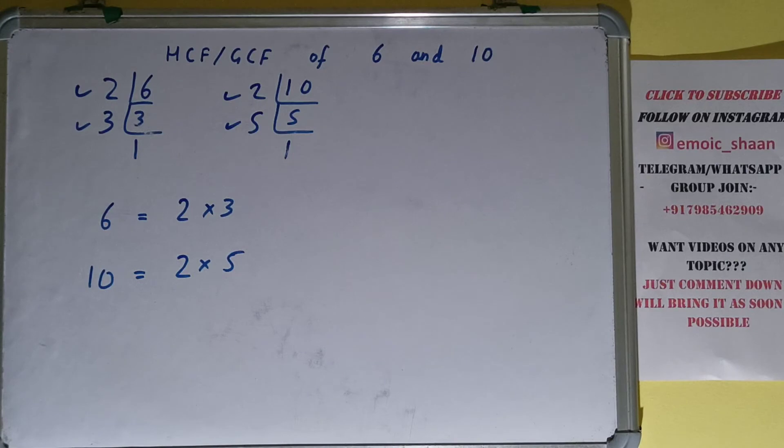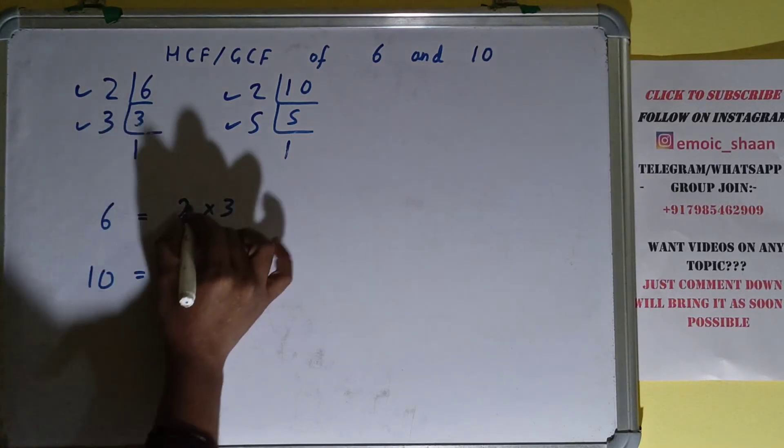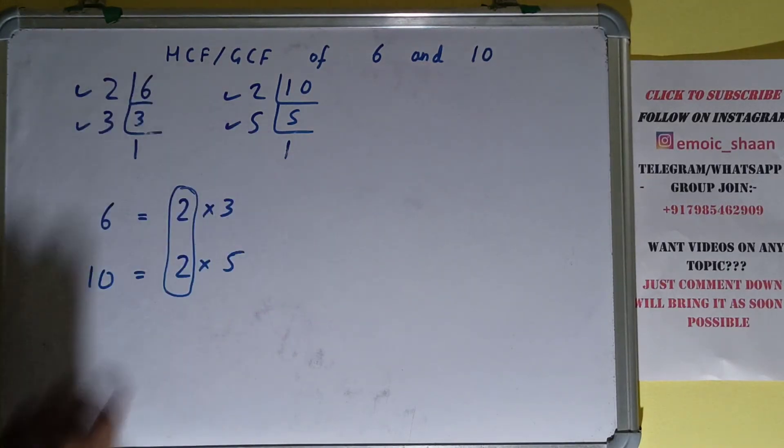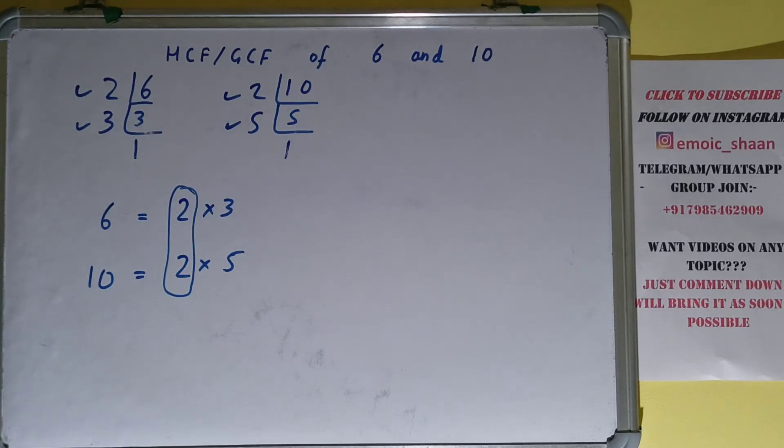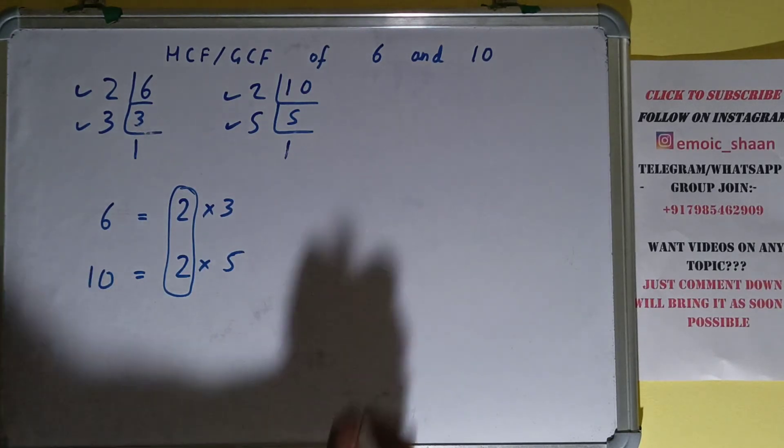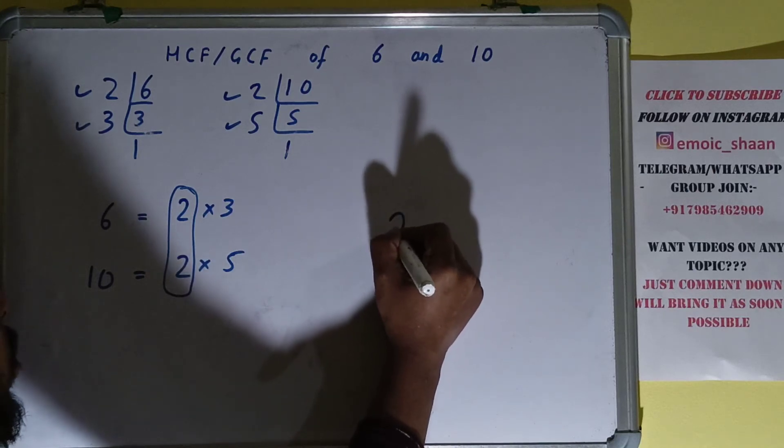Now is there anything in common between the factors of the two numbers? Yes, there is 2 in common. Is there anything else in common between the factors of the two numbers? The answer is no. So we only got 2 in common.